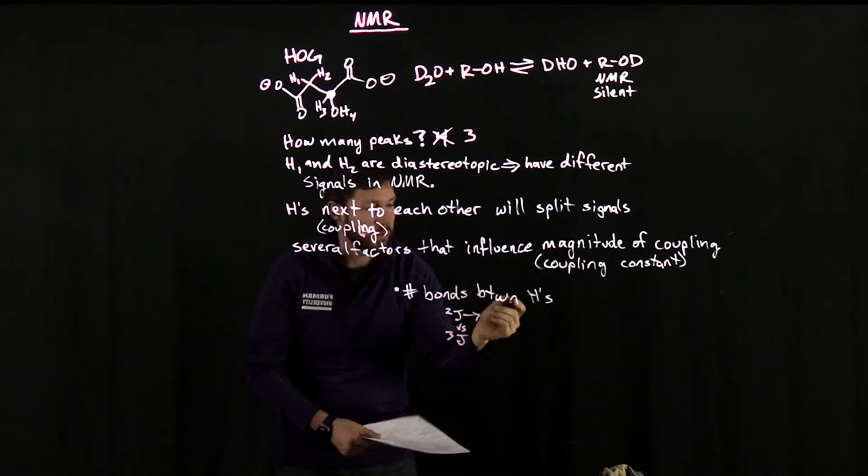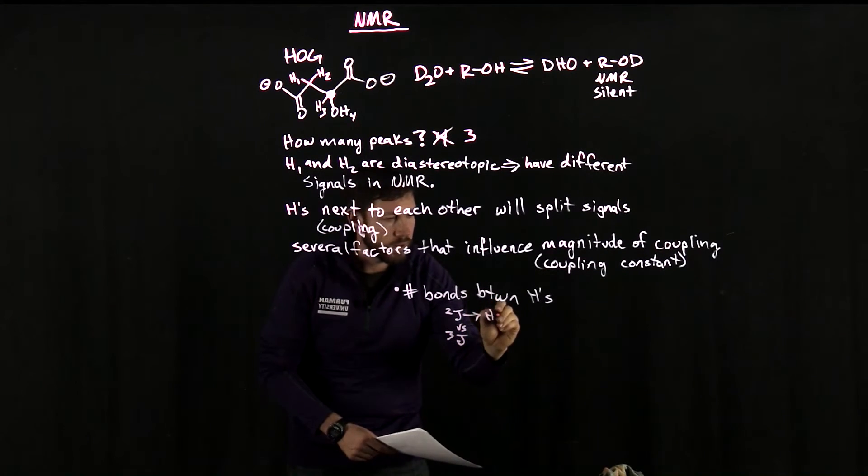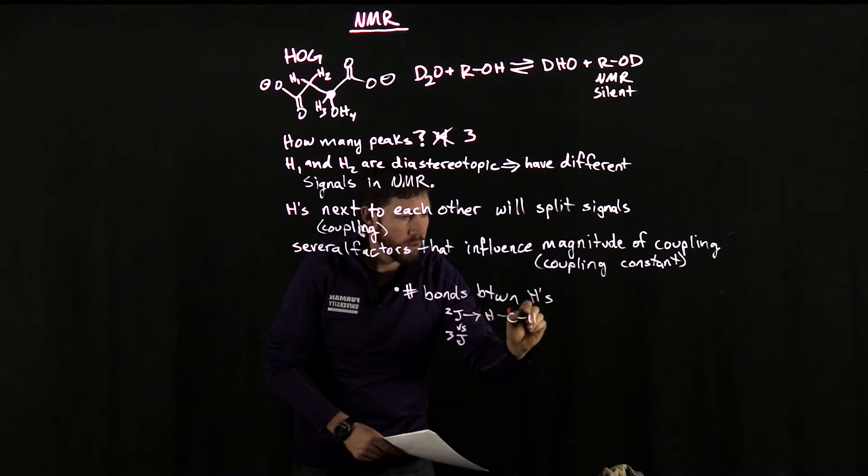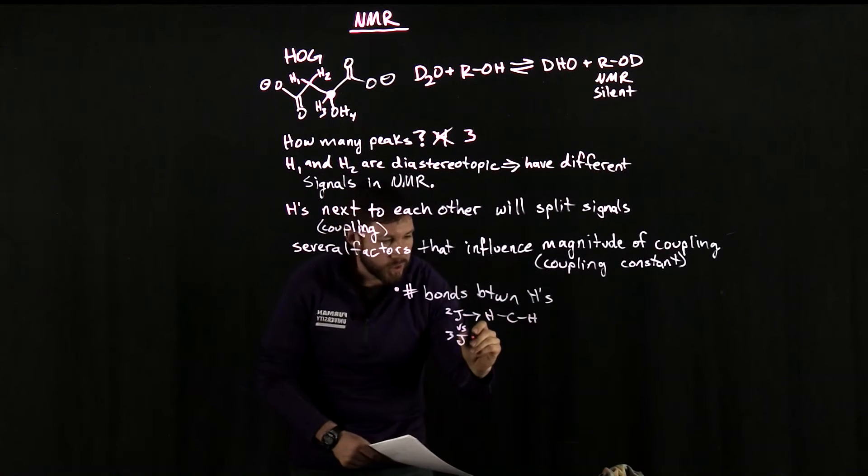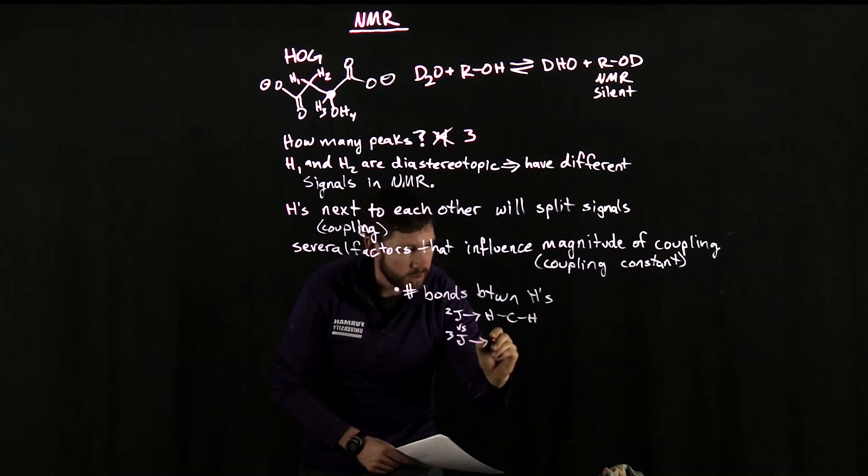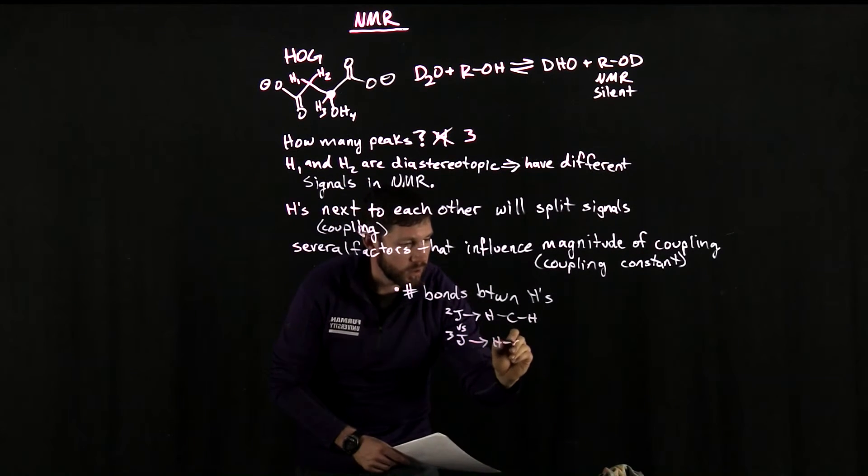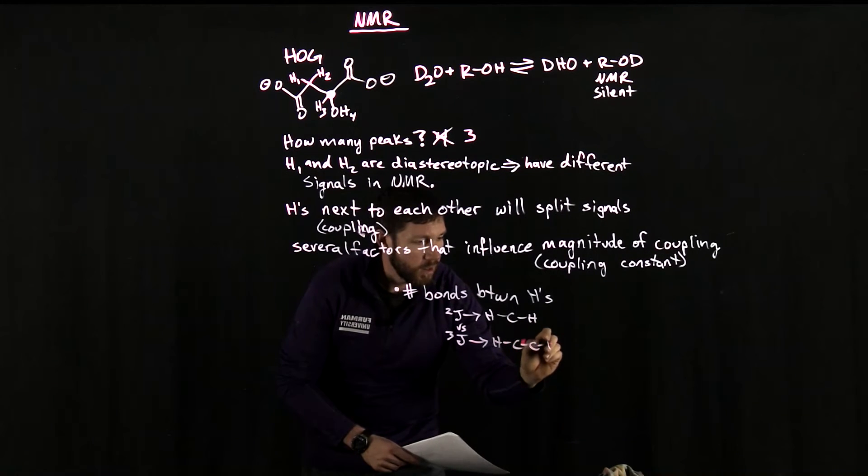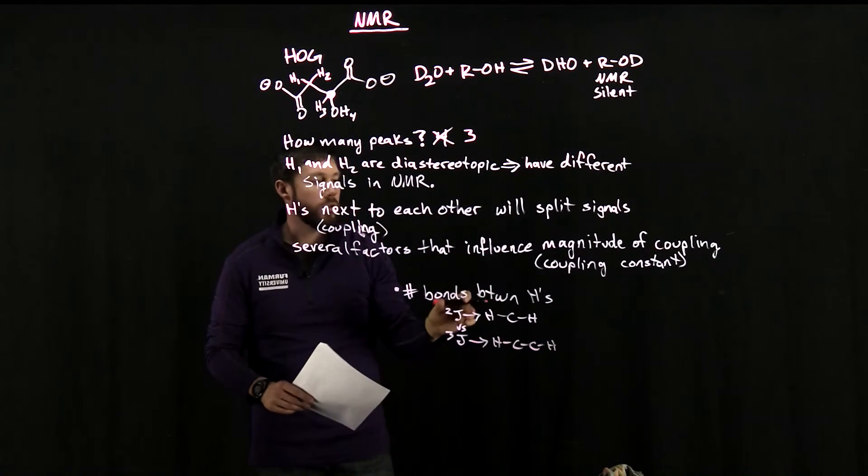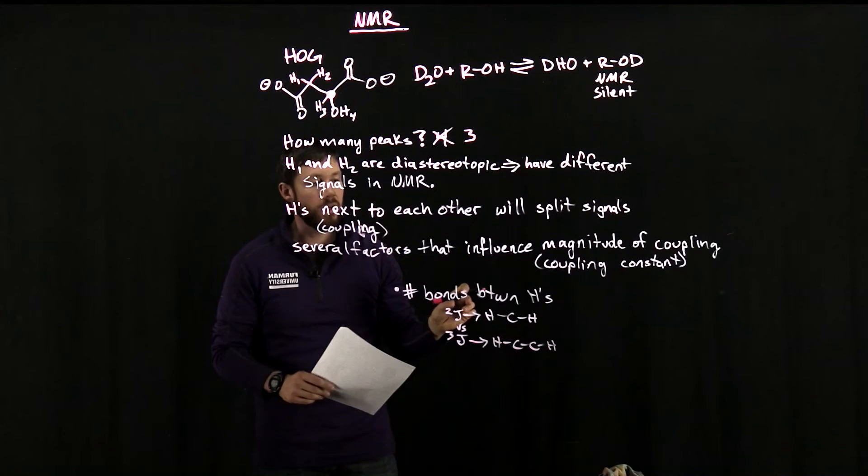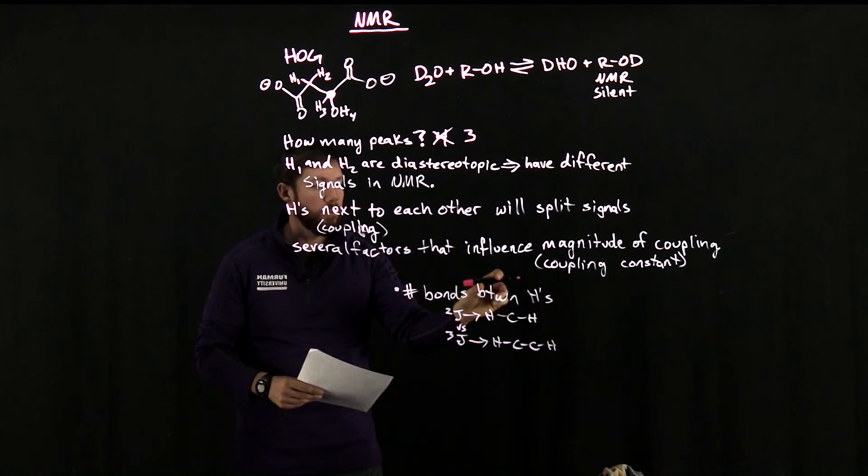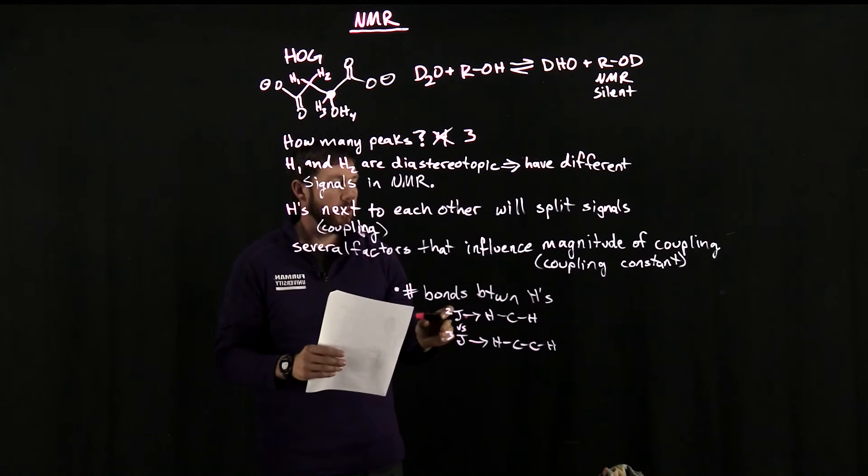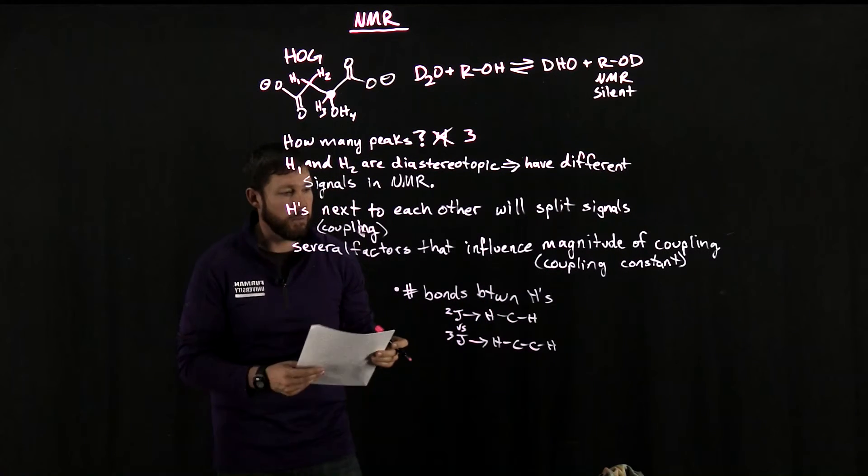With J2 coupling, there's just two bonds between the hydrogens. So it results in a scenario where both hydrogens are bound to the same carbon. In J3 coupling, there are three bonds between the hydrogens. And in this instance, the hydrogens are bonded to carbons that are neighbors to one another. And just having this different number of bonds between the hydrogens can influence the magnitude of these coupling constants.